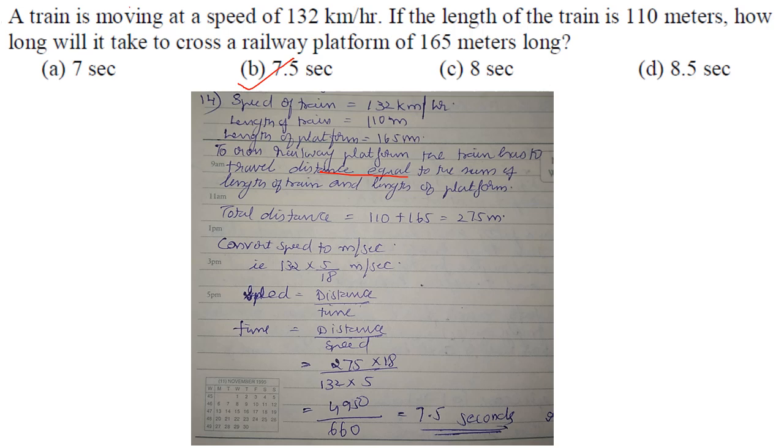A train is moving at 132 km/h. If the length of the train is 110 meters, how long will it take to cross a railway platform 165 meters long? Total distance = 110 + 165 = 275 m. Convert speed: 132 × 5/18 = m/s. Time = distance/speed = 7.5 seconds. Answer is option B.